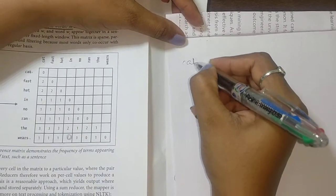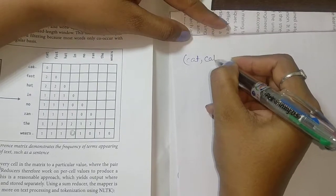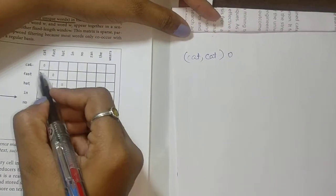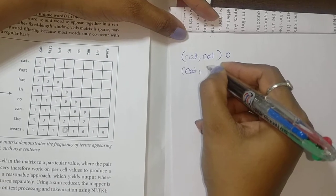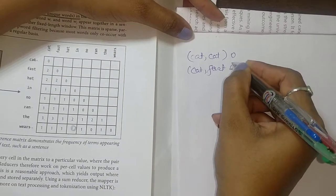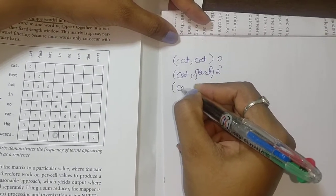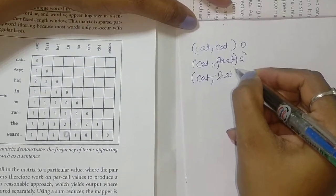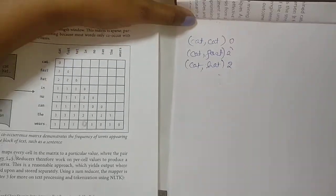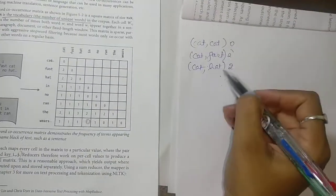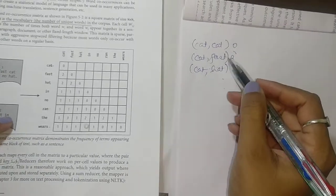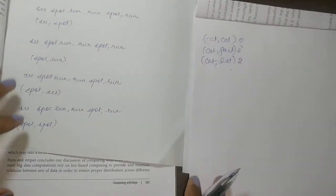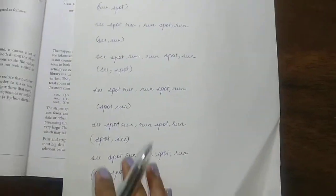In the previous example, writing it in this manner: cat-cat value is 0, cat-fast occurrence is 2, cat-hat occurrence is 2, and so on. This is how we usually write the values — this is called the pairs approach. Now we are going to solve the word co-occurrence matrix for the new sentence.